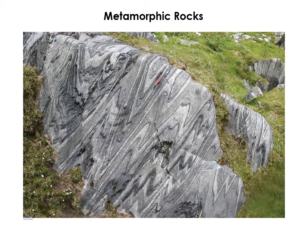When we see metamorphic rocks, they often look like this. This is a metamorphic rock called gneiss. We can see bands of dark and light minerals, and they're really wavy. You can imagine how this rock has been tortured and twisted as it's been compressed by tectonic forces.